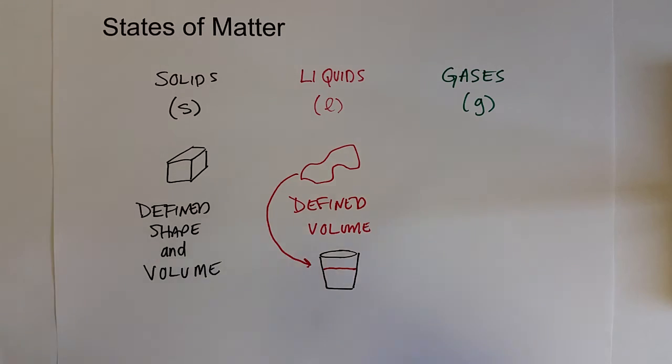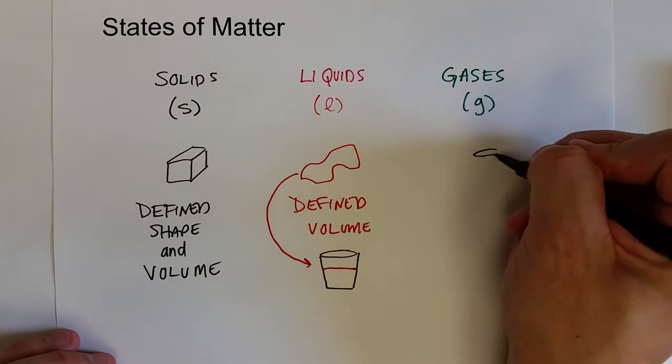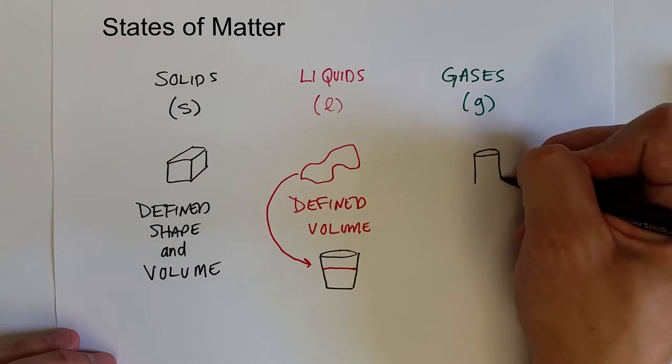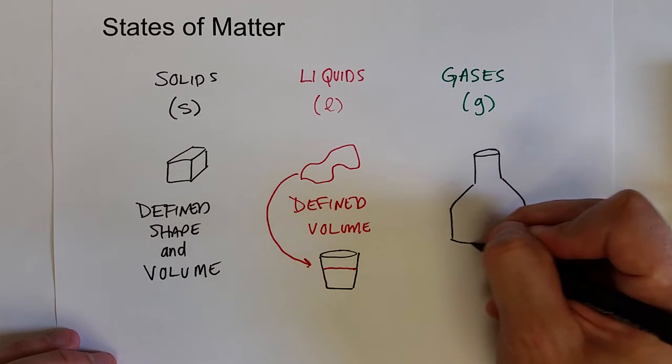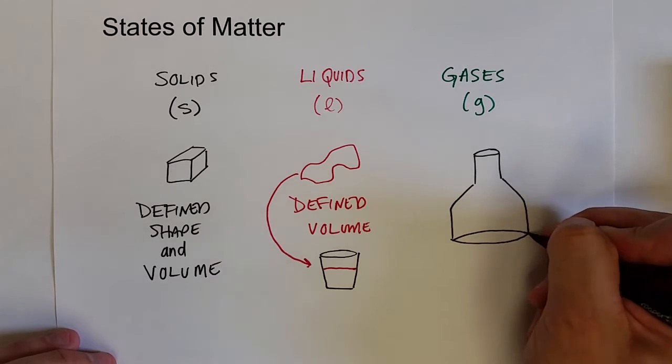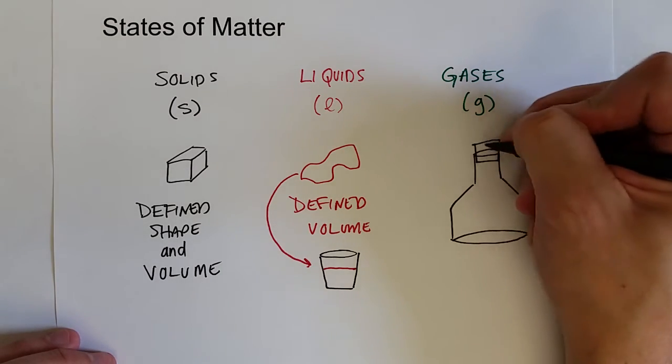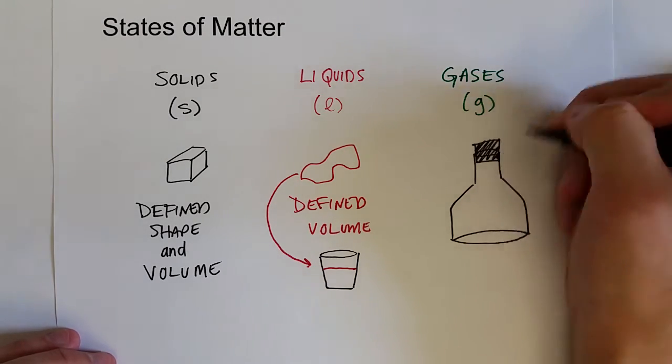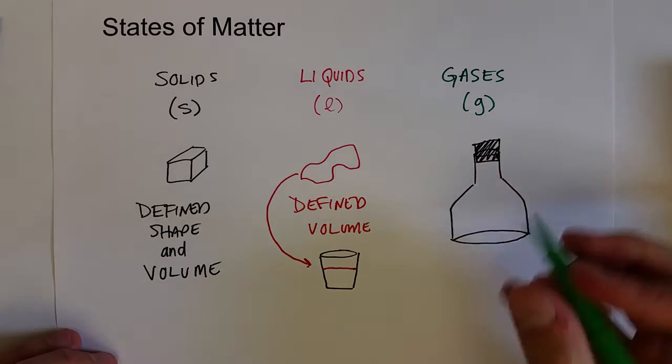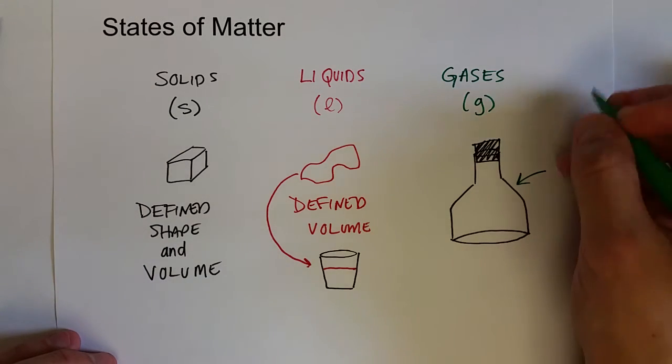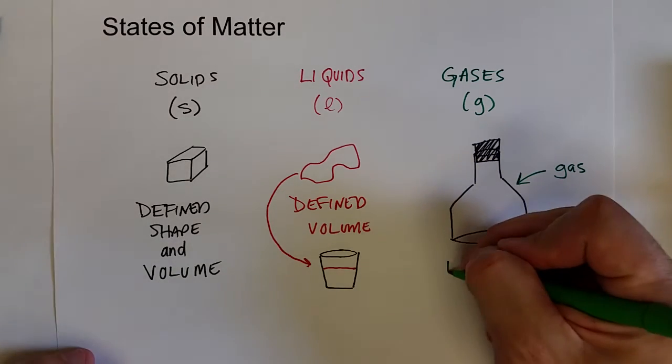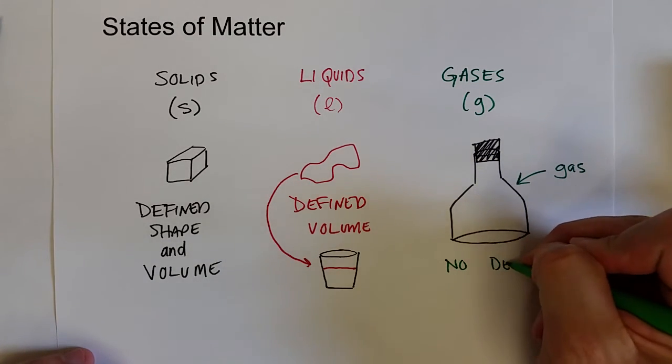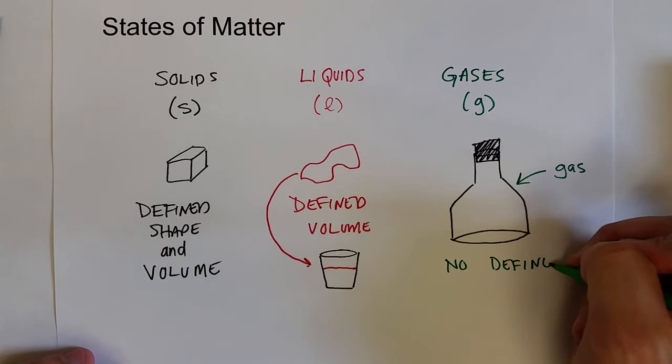Gases don't have a defined shape or volume. They would take the shape of their container that they are in. And so we'd have to put a stopper on there and the gases would take the entire volume of the container.